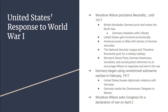The next thing that happens is Britain intercepts a telegram from a German foreign affairs official named Arthur Zimmerman, meant for the German ambassador in Mexico. The Zimmerman telegram said that if Mexico declared war on the United States, Germany would help Mexico in that war. Mexico actually considered the offer but decided they could not defeat the United States, and so it never happened.